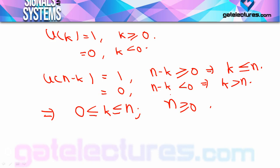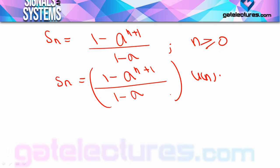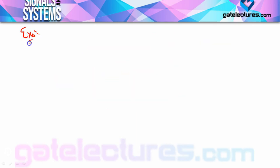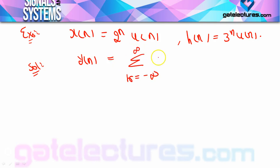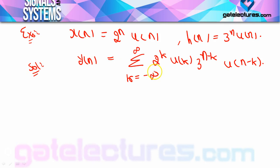इस तरह के equation वाले questions इस method से solve होते हैं। अब एक और example देखते हैं — कितना जल्दी होगा। मान लीजिए X(n) = 2^n * U(n) और H(n) = 3^n * U(n)। Y(n) = summation k=-∞ to +∞ of X(k) * H(n-k) = summation of [2^k * U(k)] * [3^(n-k) * U(n-k)]।